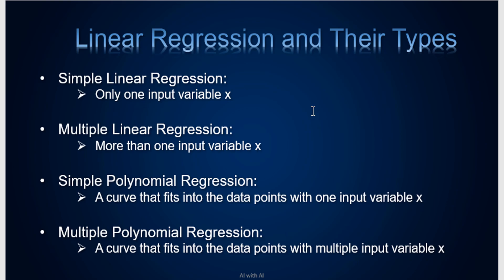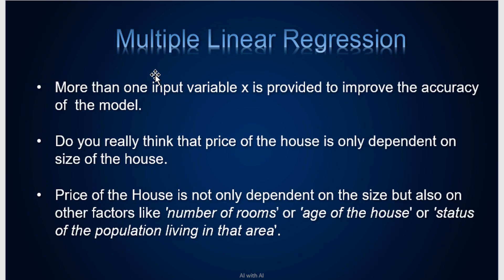Simple linear regression with one variable we have already seen a demo for. So what exactly does multiple linear regression stand for? Multiple linear regression is where more than one input variable is considered to improve the accuracy of the model. Do you really think that the price of a house only depends on the size of the house? If you provide more than one variable to the algorithm, the accuracy may improve more.